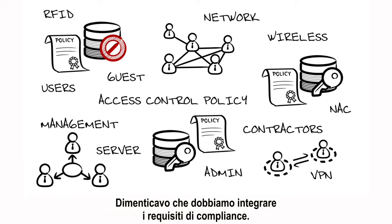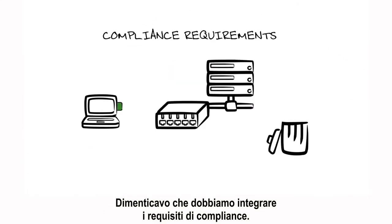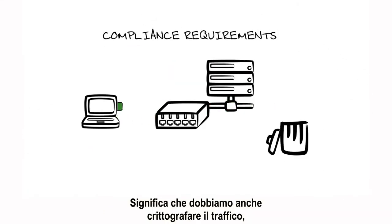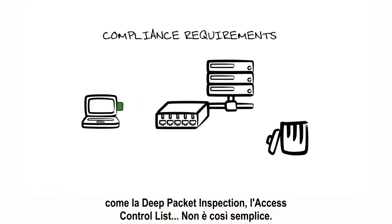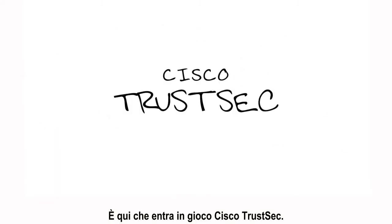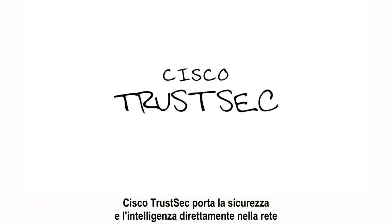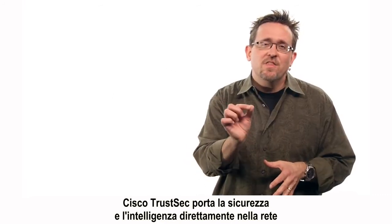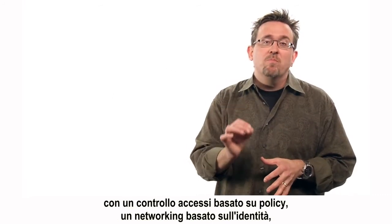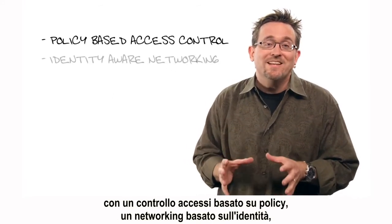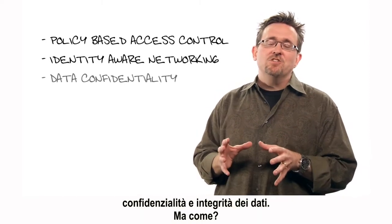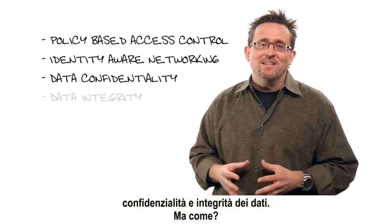We need to add compliance requirements, which means we're going to need to encrypt the traffic as well, but that's going to cripple existing security methods like deep packet inspection and access control lists. This is where Cisco TrustSec comes in. Cisco TrustSec builds security and intelligence into the network with policy-based access control, identity-aware networking, data confidentiality, and data integrity.